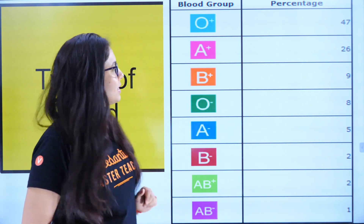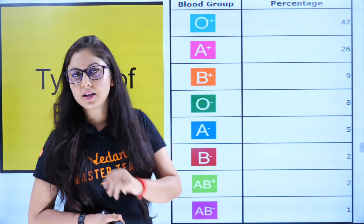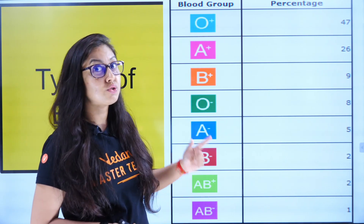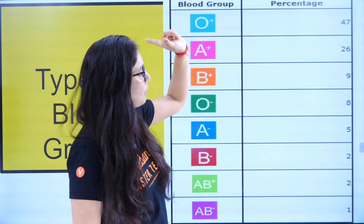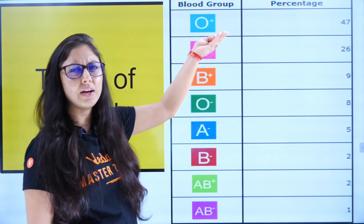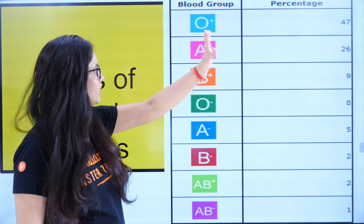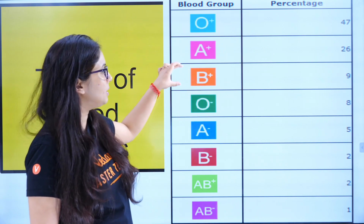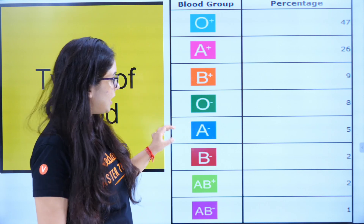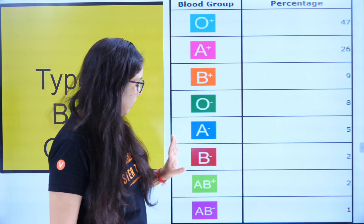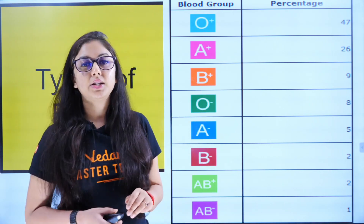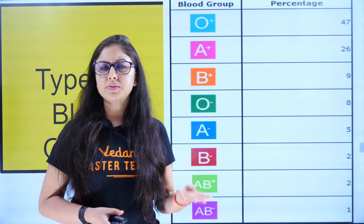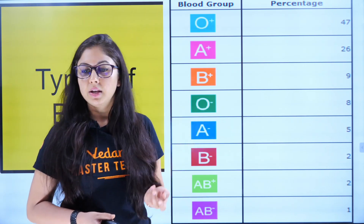O-positive is the highest, around 37%. A-positive is about 35%, then B-positive is 26%, O-negative is 8%, A-negative is 5%, B-negative is 2%, AB-positive is 2%, and AB-negative is the minimum. So there are 8 types of blood groups — 4 positives and 4 negatives: A, B, AB, and O.